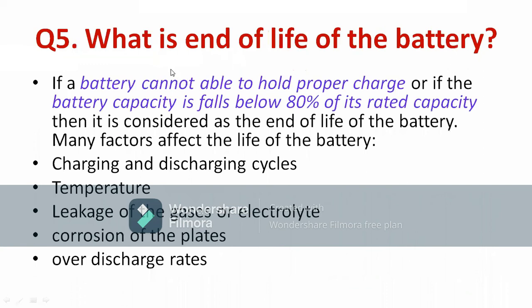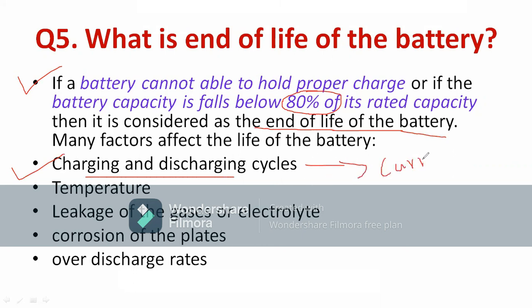The fifth question: what is the end of life of the battery — how do you determine it? If a battery cannot hold a proper charge, or if its capacity falls below 80% of its rated capacity, we consider that the end of the battery's life. Parameters to consider include: charging and discharging cycles, temperature, leakage of gases or electrolyte, chemical properties, corrosion of the anode and cathode plates, and over-discharge rates.